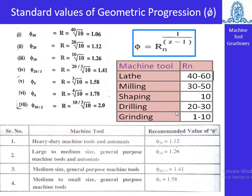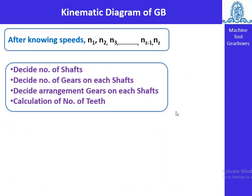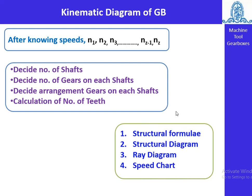After determining the various speeds with constant φ from n_min to n_max, the kinematic diagram is used. It determines: the number of shafts, the number of gears on each shaft, the arrangement of gears on each shaft, and the calculation of number of teeth. All this information is obtained from the kinematic diagram. We now look at structural formulas and how to draw structural and ray diagrams.